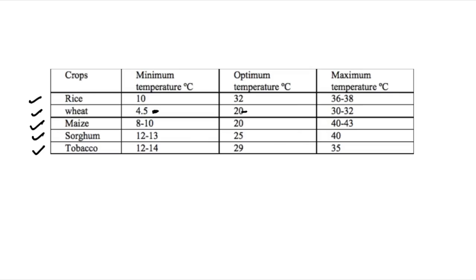What is the optimum temperature for rice? It's 32°C. For maize, it's also 20°C — so wheat and maize require the same optimum temperature. These three crops — rice, wheat, and maize — and their optimum temperatures are very important from the exam point of view, so remember them.